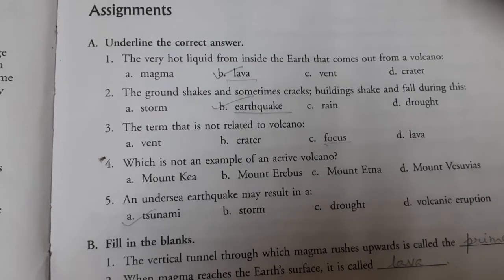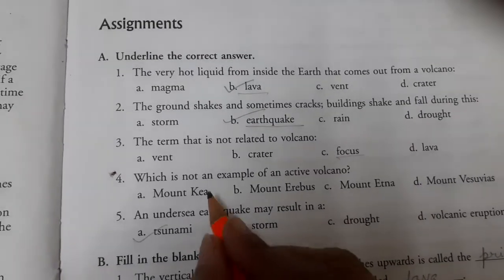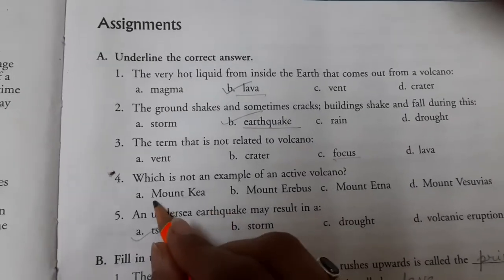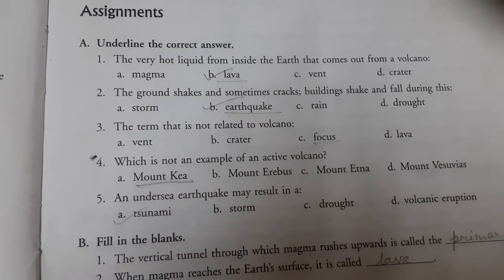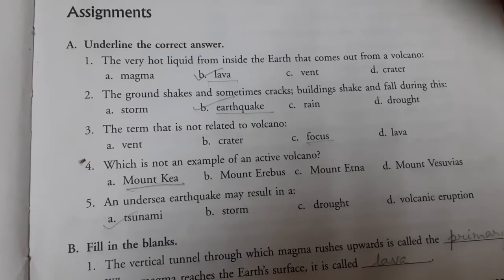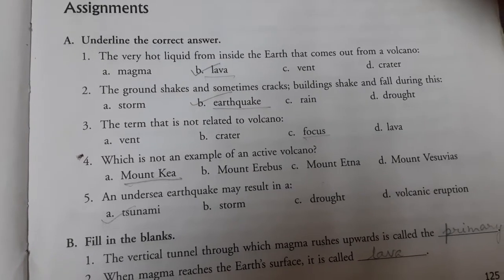Which is not an example of an active volcano — you can underline Mount Kia. Why? Because this is a dormant volcano; the other three are active volcanoes. An undersea earthquake may result in a tsunami.